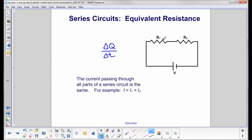Whatever goes through this resistor has to go through this resistor. So the current coming out of the battery, which we label I, equals I1, which is the current through resistor 1, and it equals I2, which is the current through resistor 2.